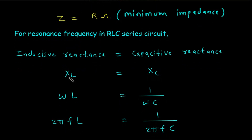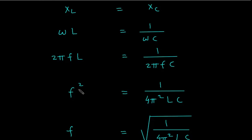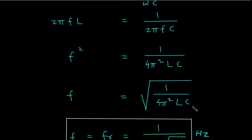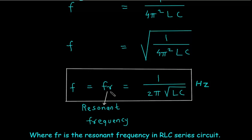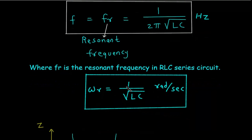At resonance, XL = Xc, so ωL = 1/(ωC), with ω = 2πF. From this, F² = 1/(4π²LC), and therefore F = √(1/(4π²LC)). So the resonant frequency is FR = 1/(2π√(LC)), with units of Hertz. We can also express this in angular frequency form: ωR = 1/√(LC), with units of radians per second.